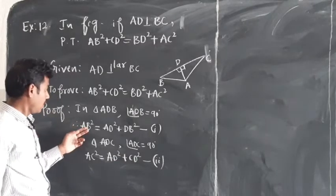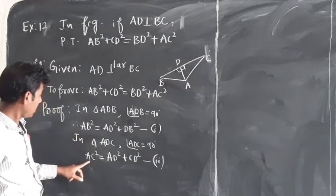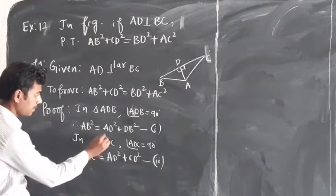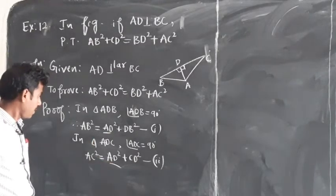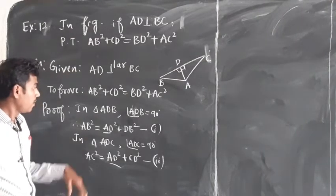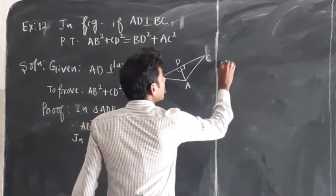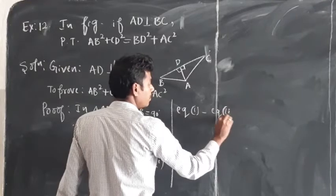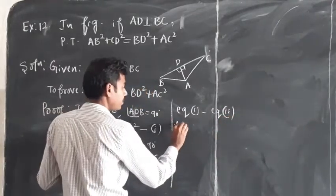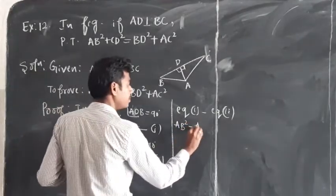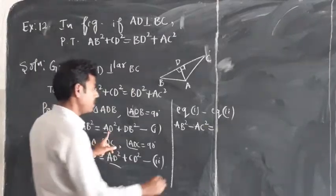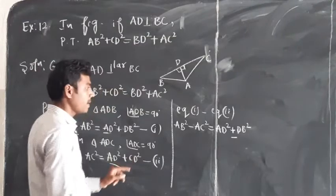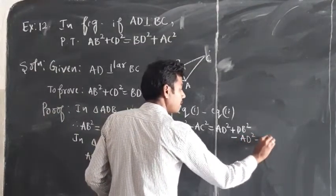AD square is common in both equations. For AB square we need a positive sign. So equation 1 minus equation 2 gives us: AB square minus AC square is equal to (AD square plus DB square) minus (AD square plus CD square).